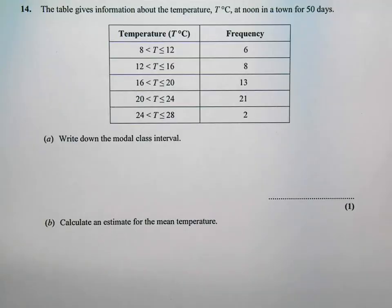This is question number 14 on the higher calculator paper from November 2013. This question is worth seven marks altogether. It has parts A, B and C. A is one mark, B is four marks and C is two marks.